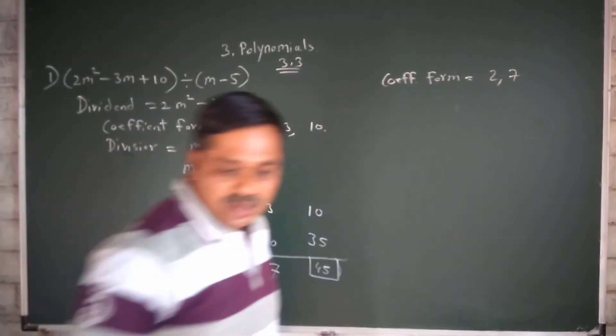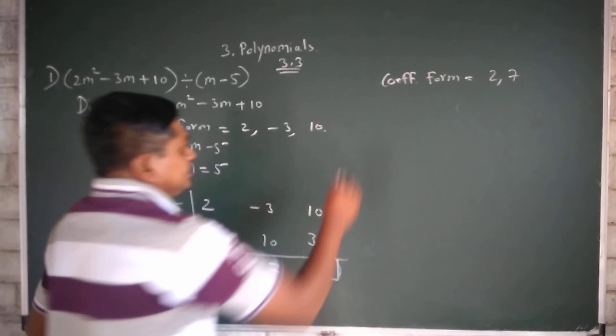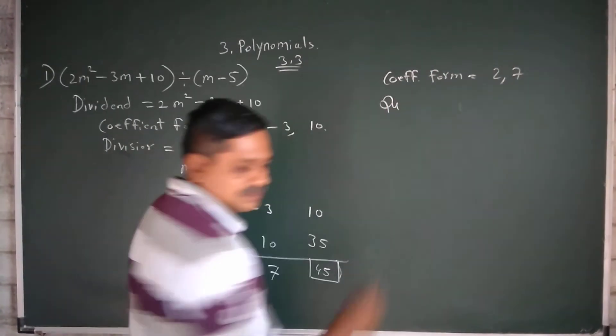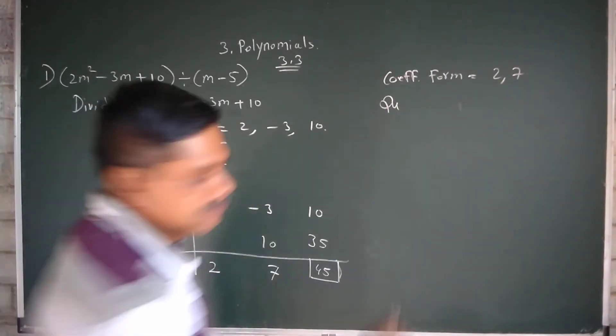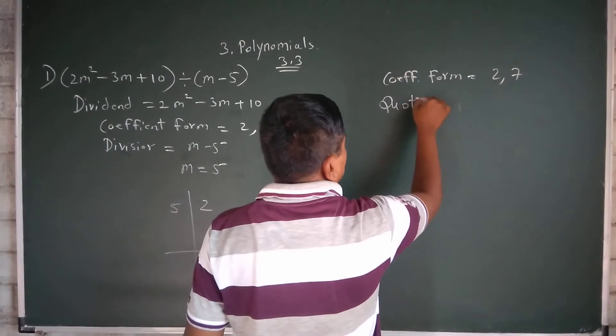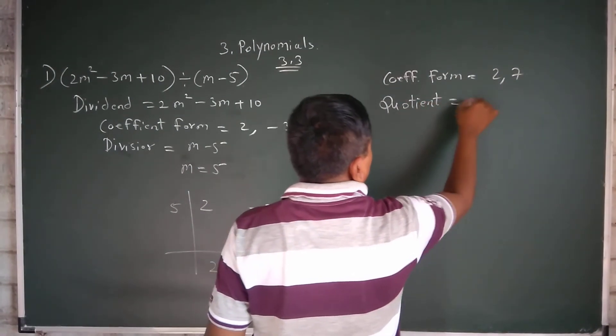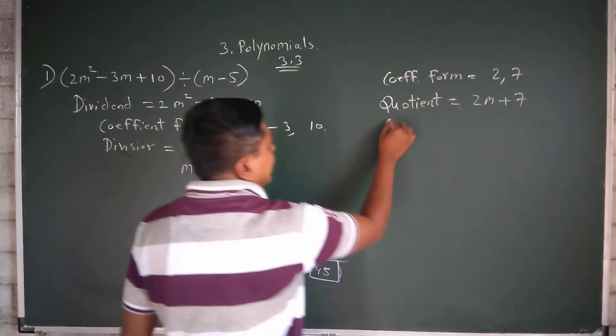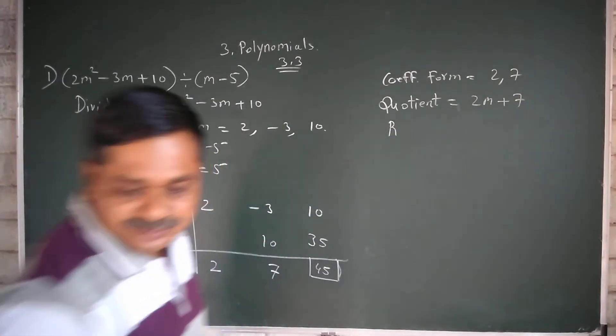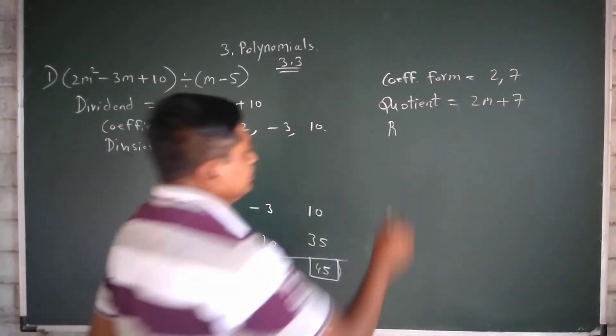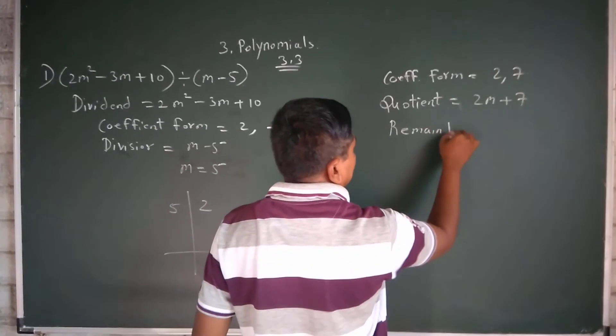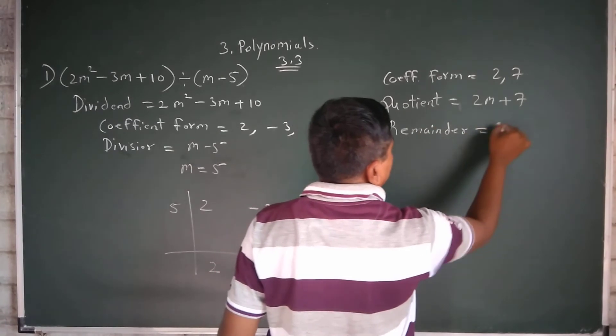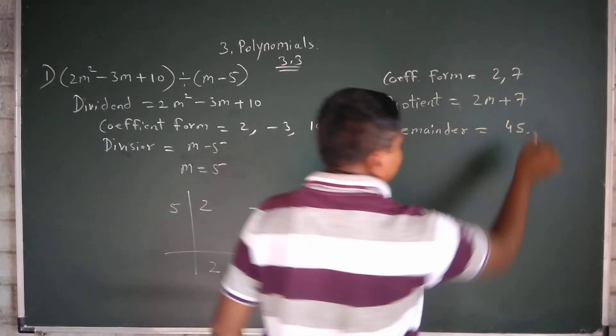So quotient is 2m + 7, and remainder is 45.